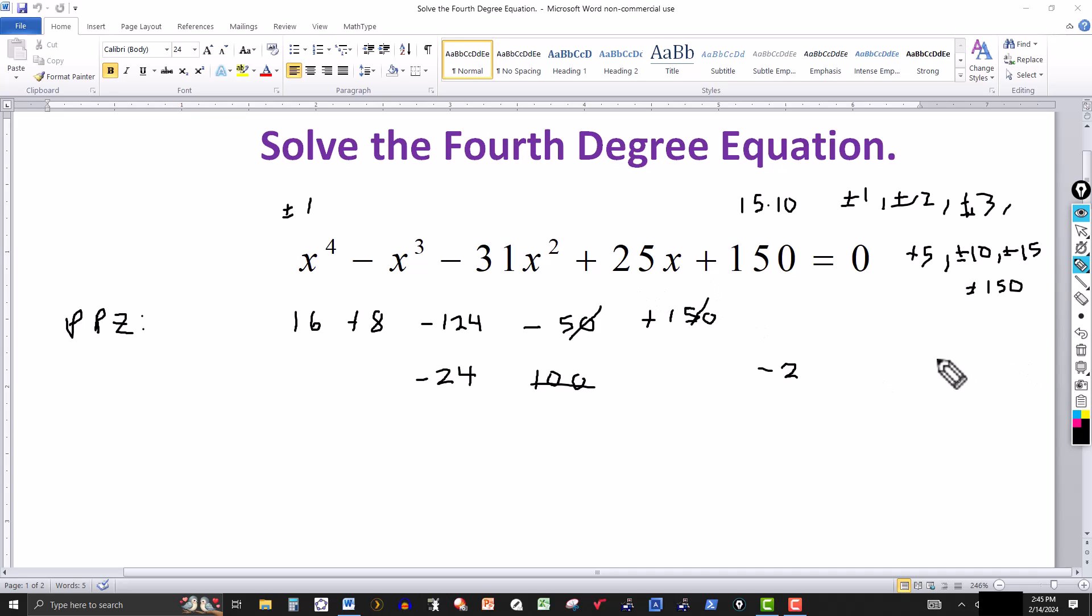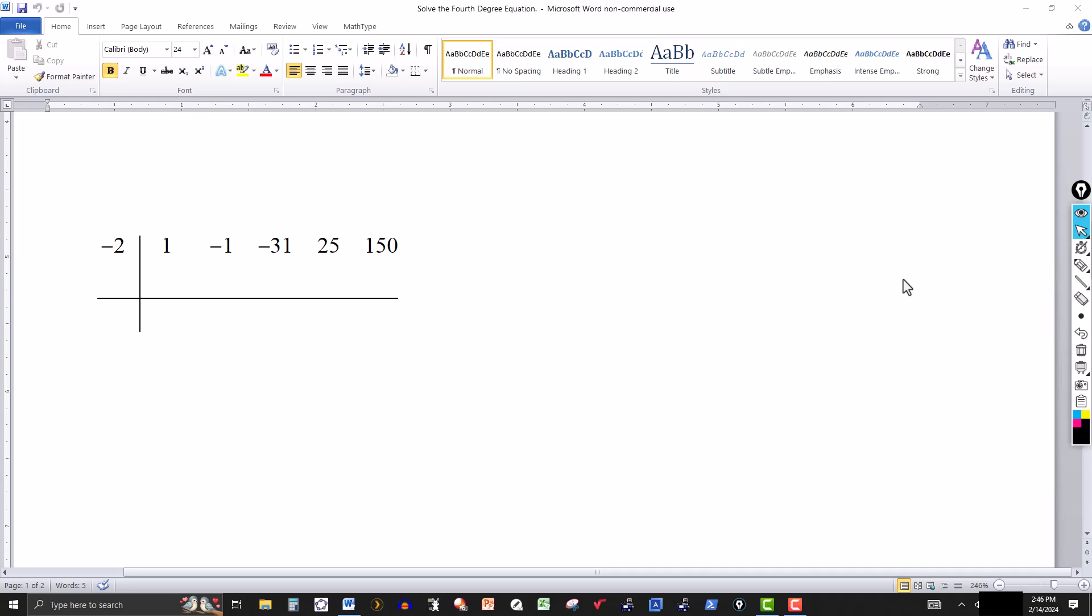So negative 2 is a zero or solution to this equation. If minus 2 is a zero, then x minus that, which would make it x plus 2, would have to be a factor of this polynomial. The easiest way to do it is to use synthetic division. You simply take the coefficients, make sure it's in descending powers. If there's any missing terms, the value of 0 will replace this in the synthetic division.